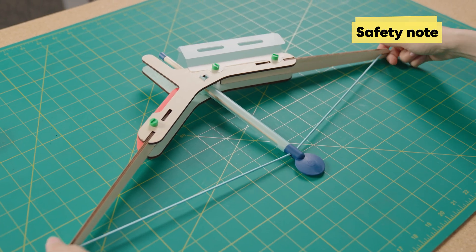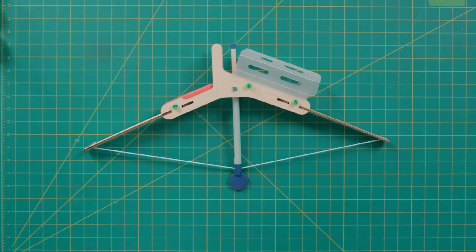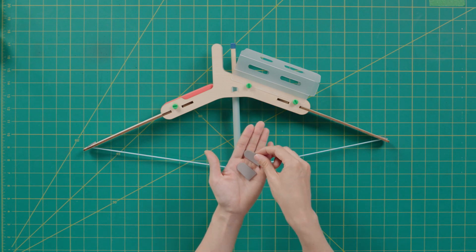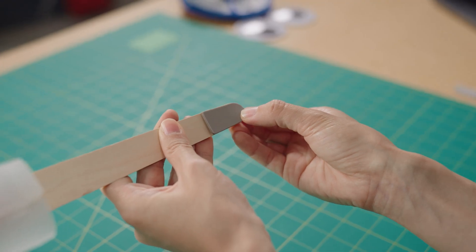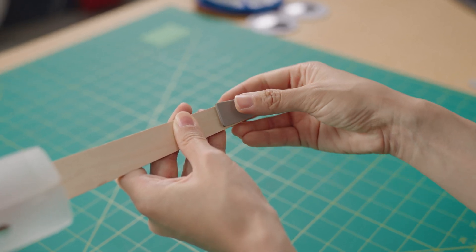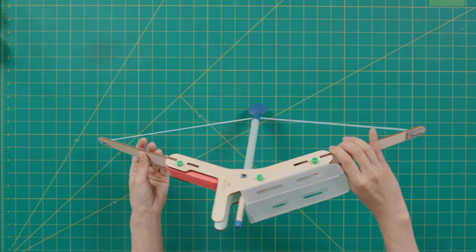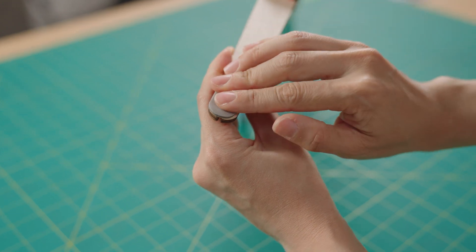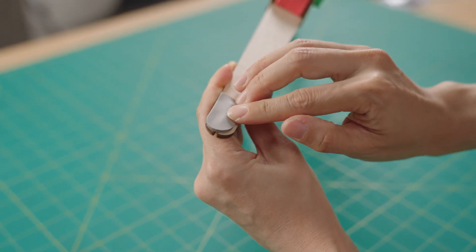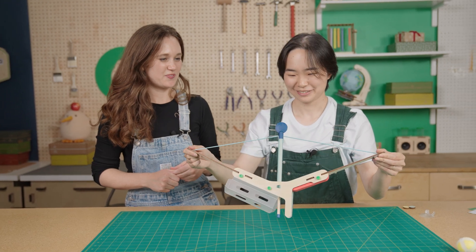Now that I have the bow string in place, Maddie, can you help me with a safety tip? You want to stick on the string guards so they cover the metal ends. They'll keep the bow string from coming loose while you're shooting. Peel the backing off and make sure they're aligned to the ends of the limb, then press down. Do the same for the other side and press down along the edge. Thanks for the safety tip, Maddie. Now the bow string is in place.